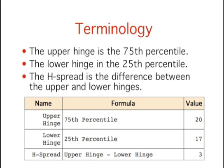Some terminology is helpful for explaining more about box plots. The upper hinge is the 75th percentile. The lower hinge is the 25th percentile. The h-spread is the difference between the upper and lower hinges. For the women's data, the upper hinge is 20, the lower hinge is 17, and the h-spread is 20-17, which equals 3.